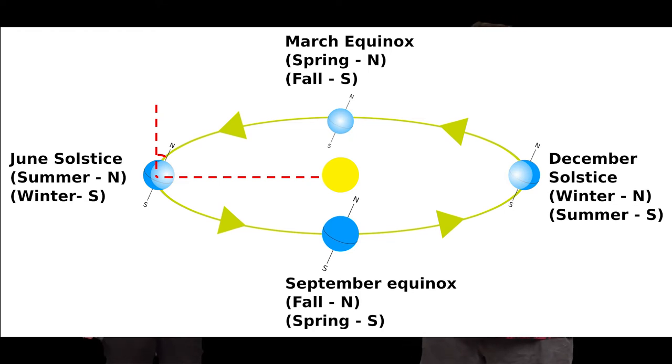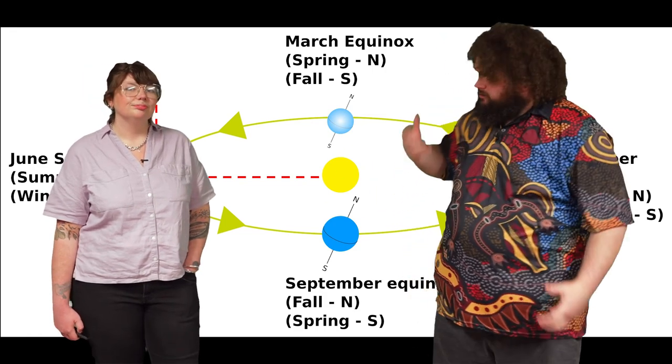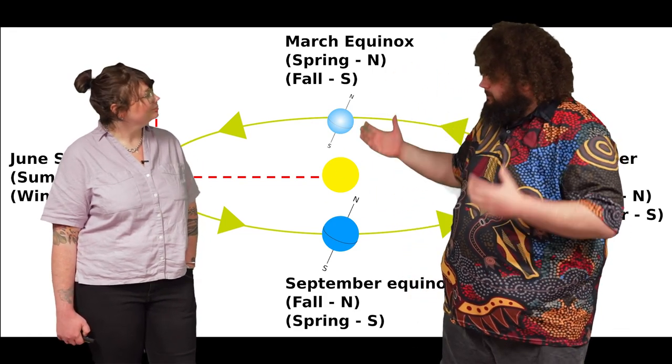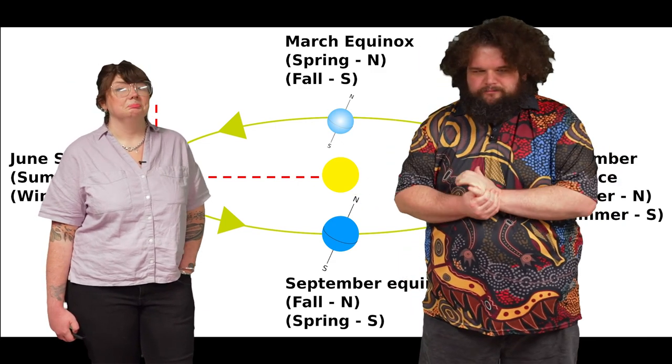It also means that each hemisphere experiences a different length of their day. So for instance, in the example where we've got summer in the southern hemisphere, we're seeing daylight longer. And so you'll have days that can get up to 14 hours long when we reach that solstice, the summer solstice. And conversely, it'll be shorter at that time in the northern hemisphere, so they might only have 10 or 11 hour days there.